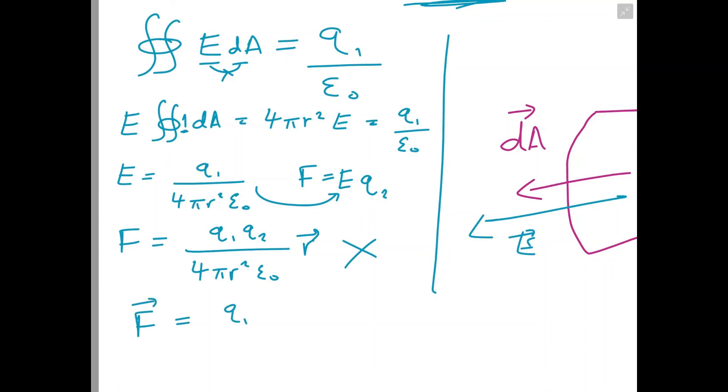If we put in r̂, so that's q₁q₂ over 4πr²ε₀ times r̂, and that is Coulomb's Law.